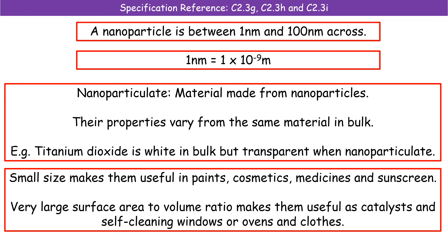The last thing we're going to consider in today's booster is nanoparticles. The definition of a nanoparticle is something that is between 1 nanometer and 100 nanometers across. Remember the math link: 1 nanometer is the same as 1 × 10⁻⁹ meters, because a math question could involve converting between nanometers and meters.